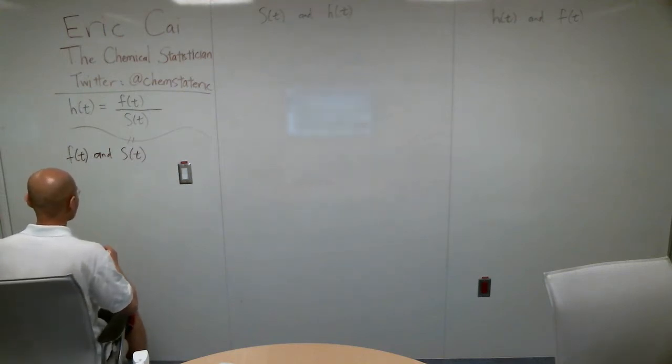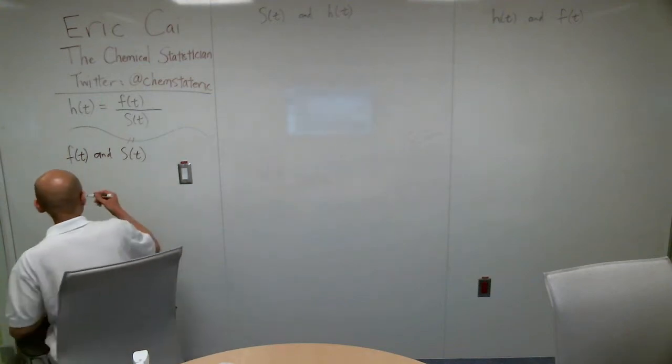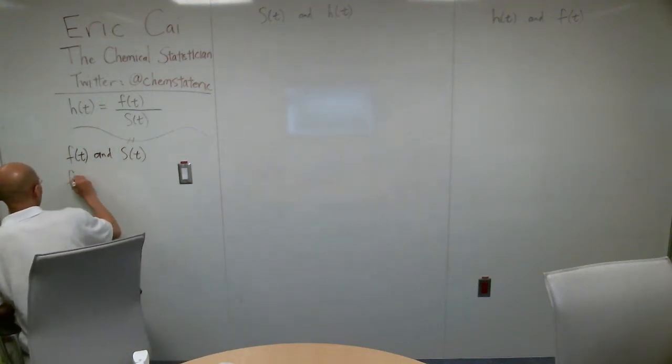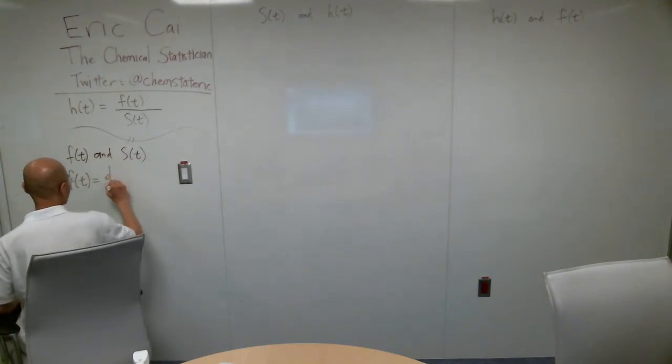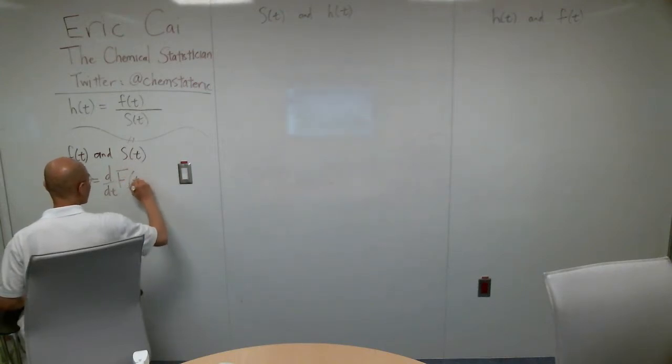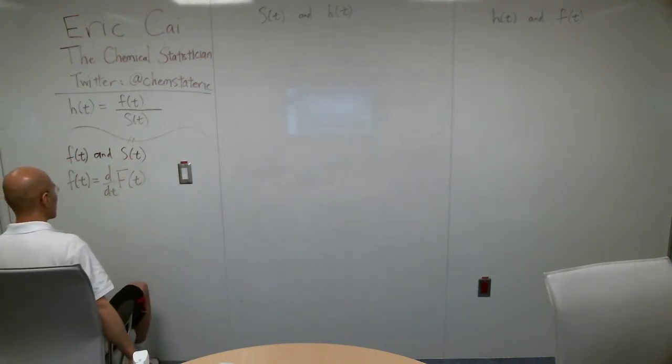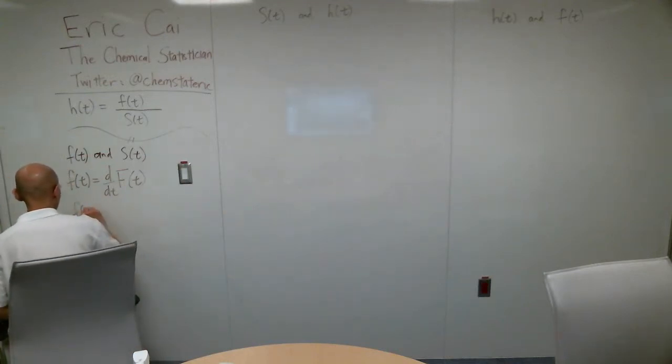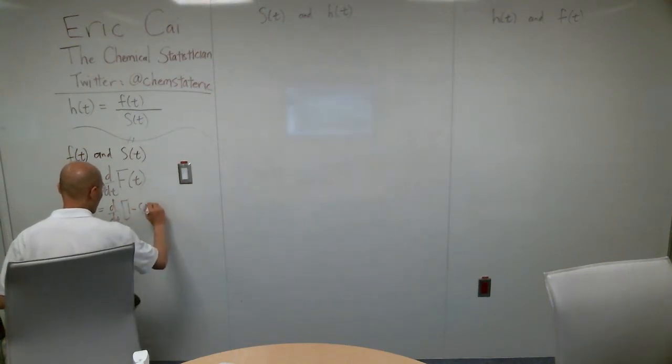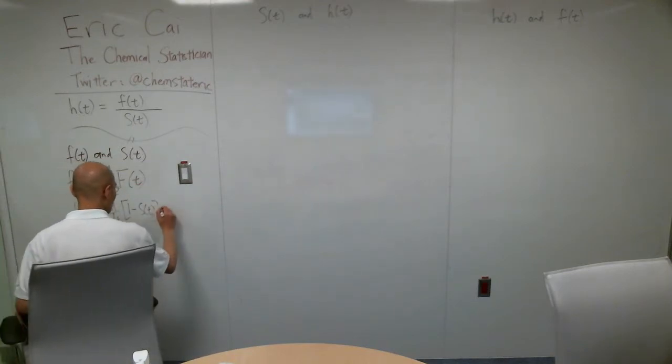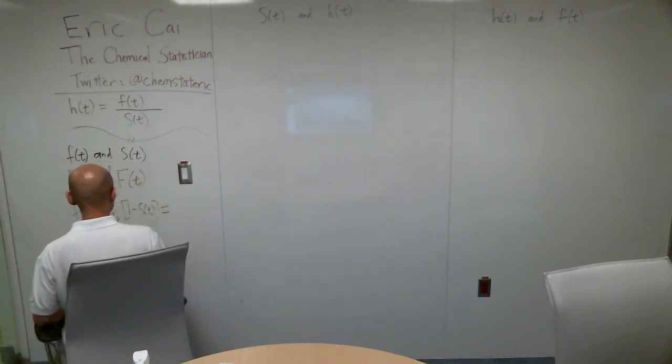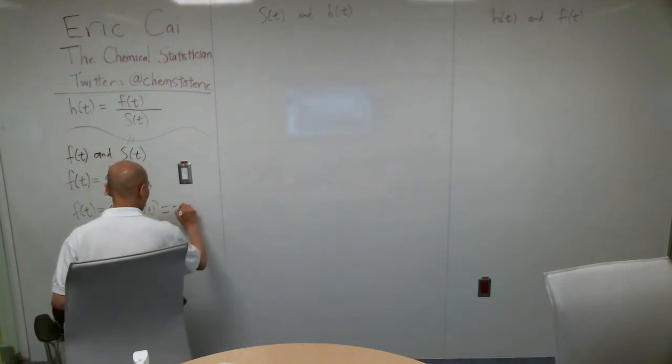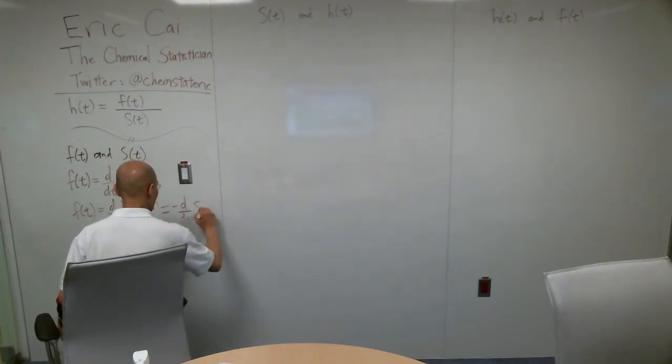So we know that f of t is equal to the first derivative of the CDF. For that, of course, it's just the first derivative of 1 minus the survival function. So we can conclude that f of t is equal to negative d by dt of S of t.